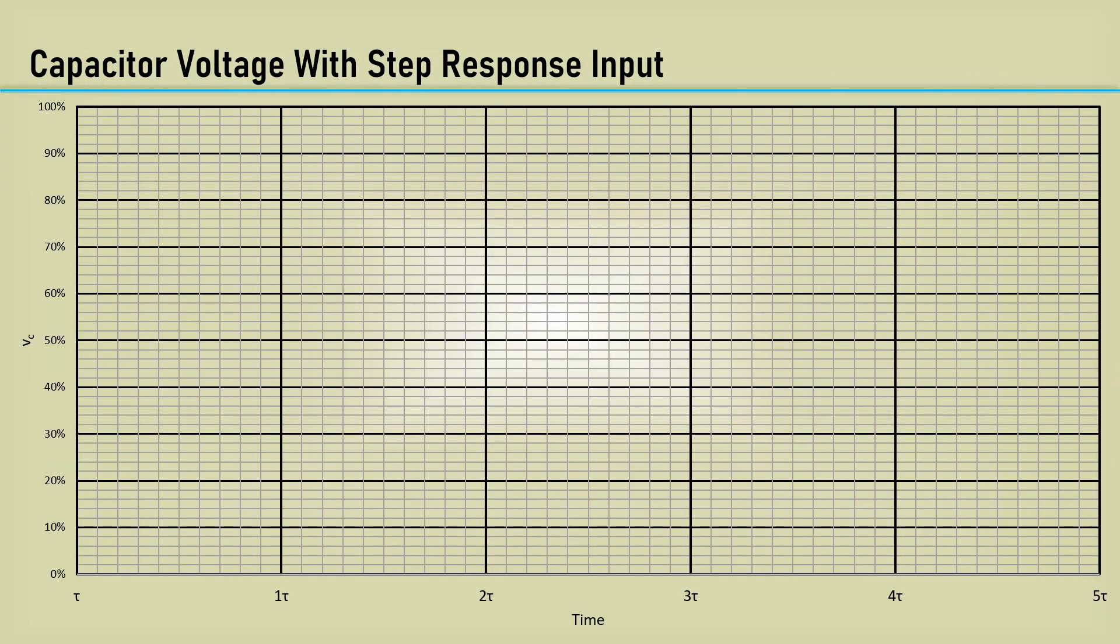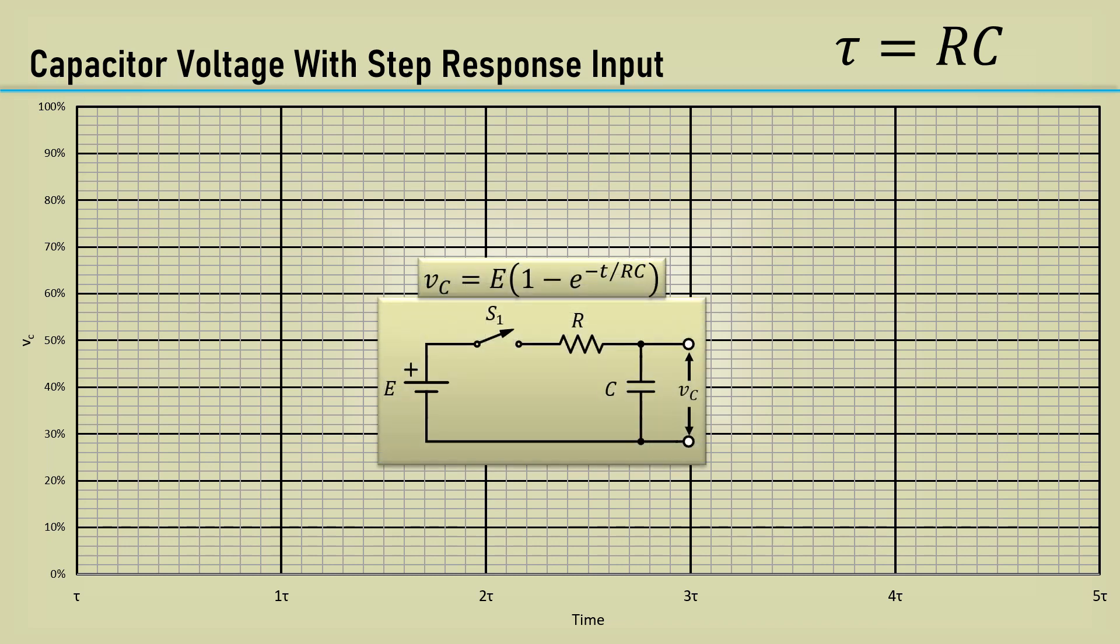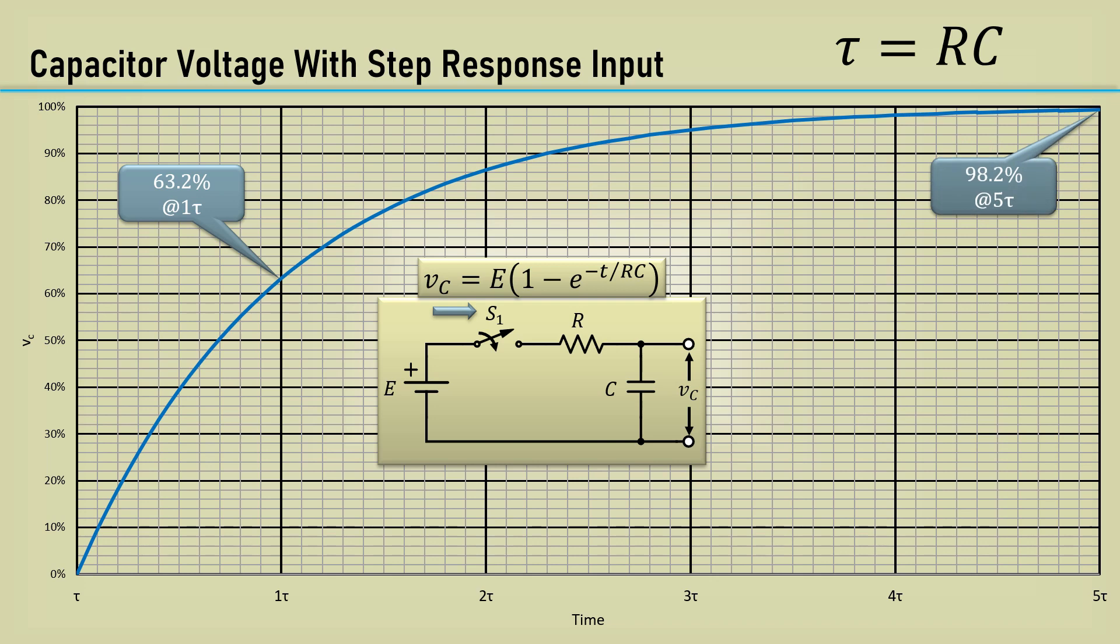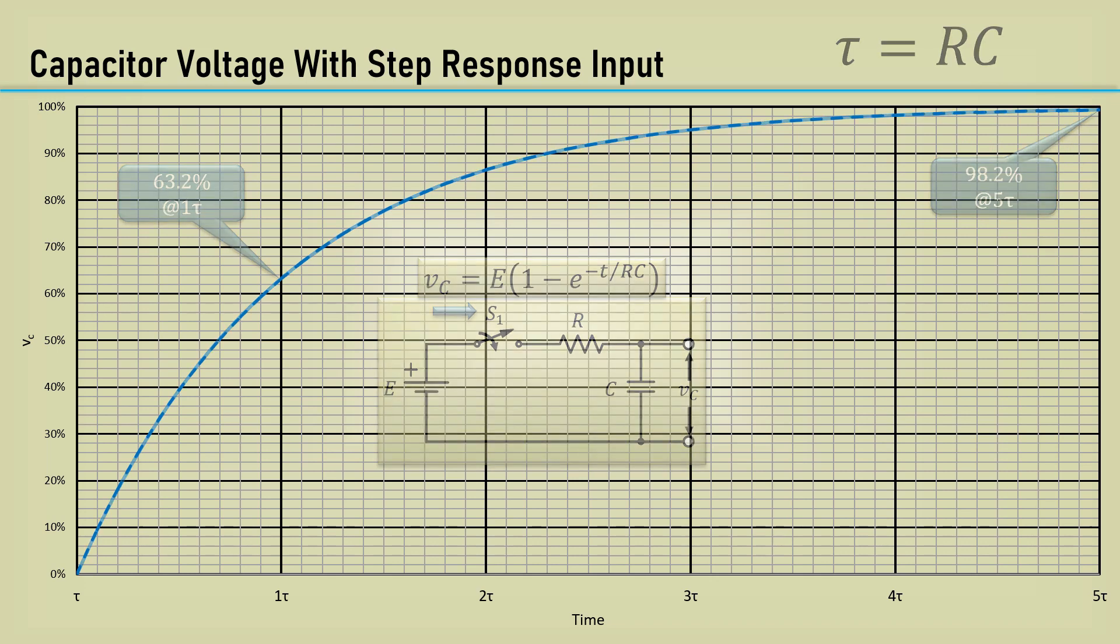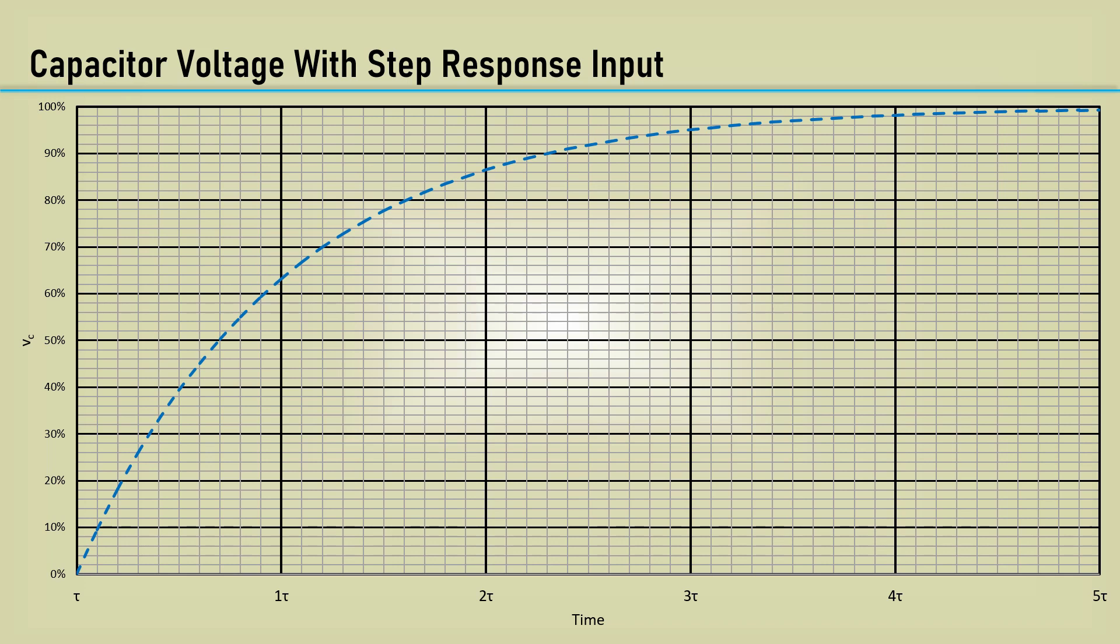Let's first review the formula for a capacitor charging. Recall that the Greek letter tau is shorthand for RC, which is the time constant. The horizontal time axis is in number of time constants. Here's the equation in a simple schematic of the capacitor being charged through a resistor. When the switch is closed, the capacitor exponentially charges to the voltage of the DC source E. Note the capacitor charges to 63.2% at 1 tau and 98.2% at 5 tau.